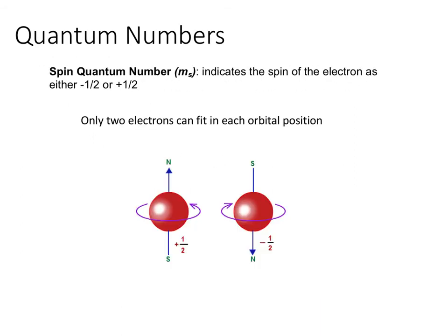The last quantum number is the spin quantum number, M sub S. It indicates the spin of the electron as either negative one-half or positive one-half. Only two electrons can fit into each orbital. To dissipate repulsive forces between the negatively charged electrons, they spin in opposite directions — one clockwise and one counterclockwise — giving plus and minus spins.